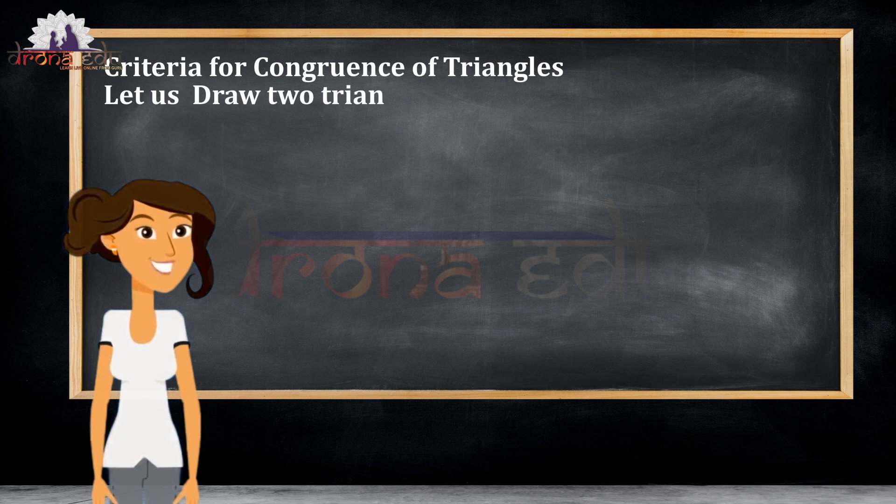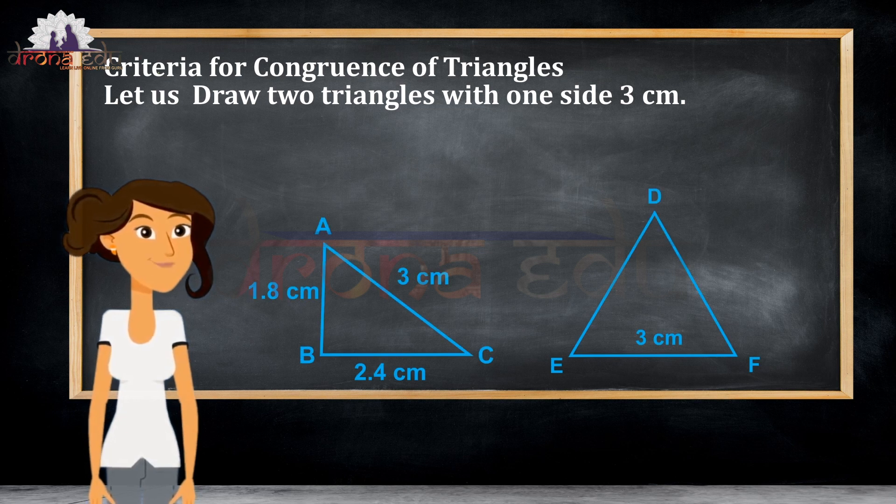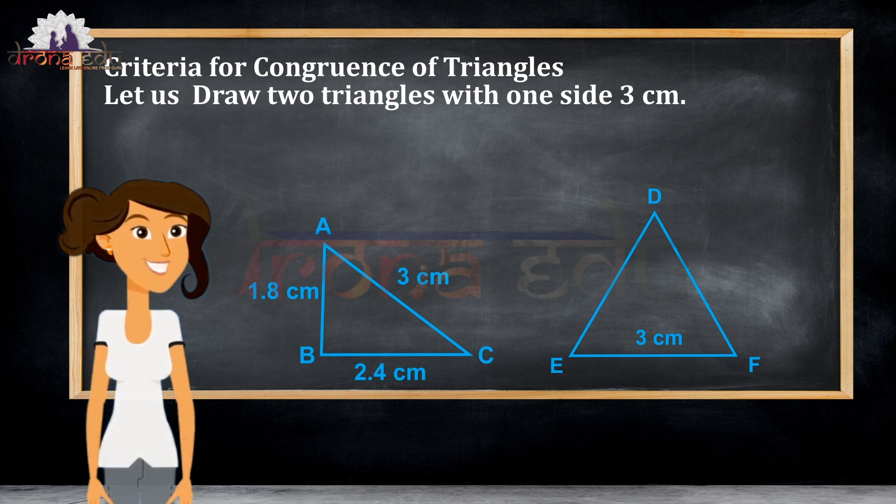Now, let us know the criteria for congruence of a triangle. First, let us draw two triangles with one side of 3 cm.